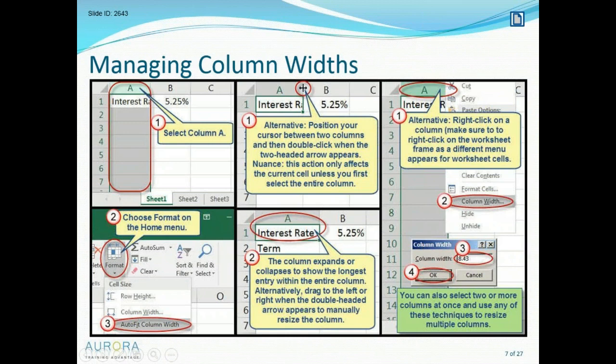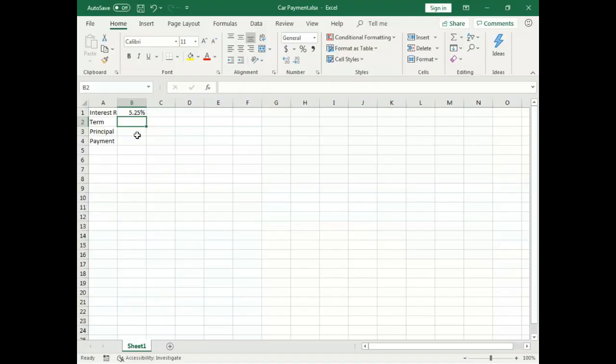If a column has become too wide and you can't reach its edge, you can right-click and use the Column Width dialog to shrink it back down to a small number — such as 10 — to get that column back under control.